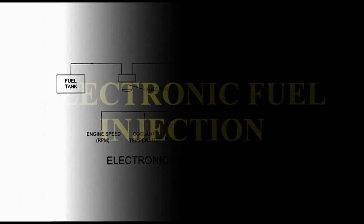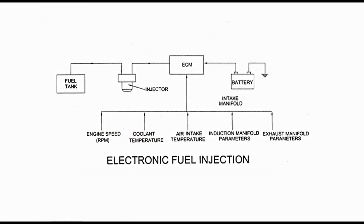In electronic fuel injection, as shown in the block diagram, an electronic control module or ECM receives inputs such as engine speed, coolant temperature, air intake temperature, parameters in the induction manifold, and exhaust data through sensors. After processing these inputs, the ECM sends information in the form of output signals to various components of the engine. The ECM is a processor programmed for a specific purpose. The information received from engine sensors helps in providing the correct amount of fuel for different load conditions.